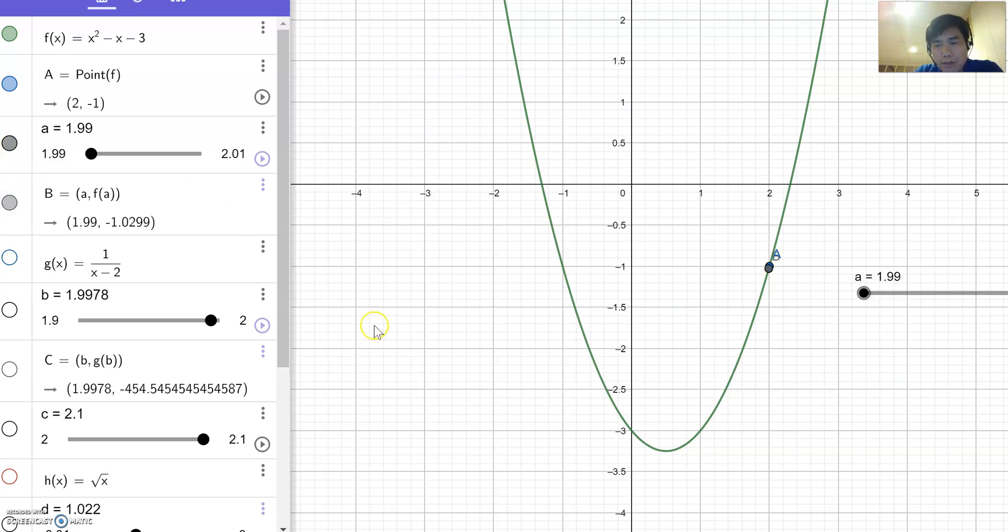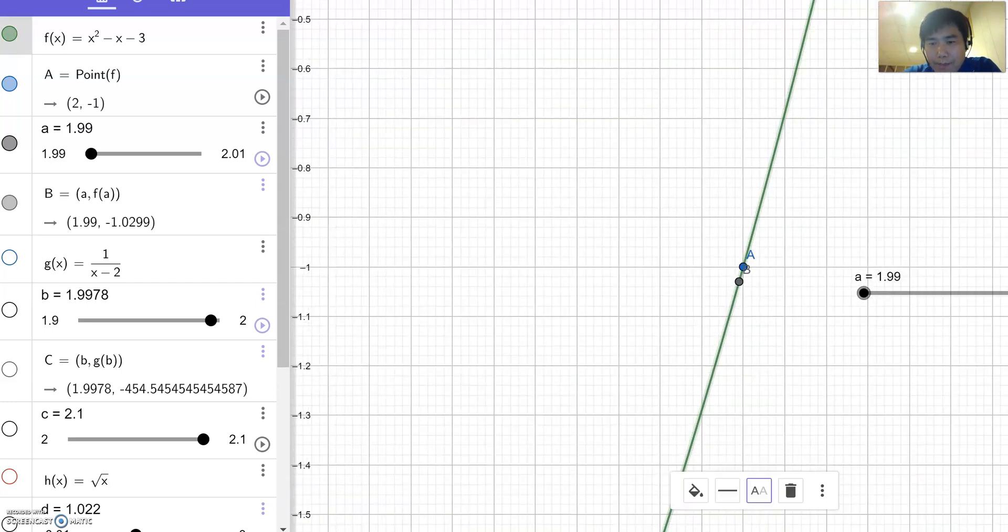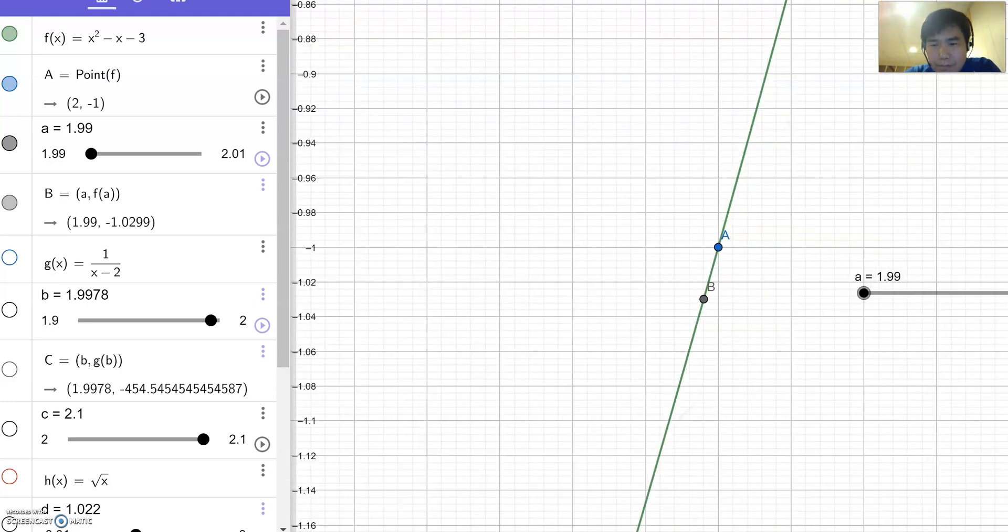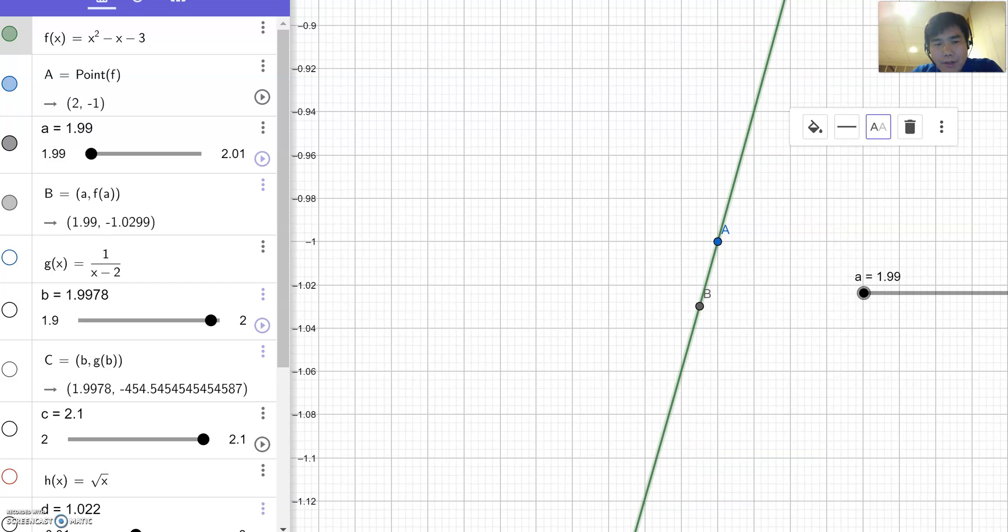Okay so let's look at here. So I'm gonna just zoom in more so you see point a and b has the gap. You see that right okay. So far point a is two and negative one and then point b this is the 1.99 and then negative 1.0299 okay.